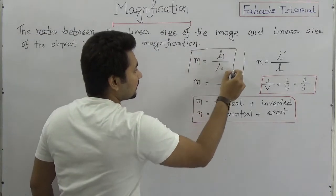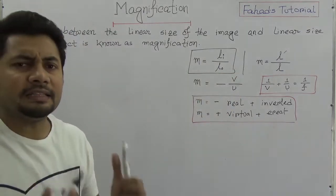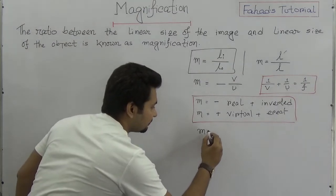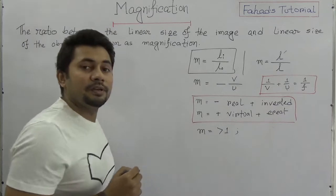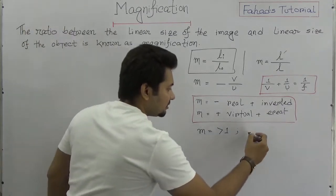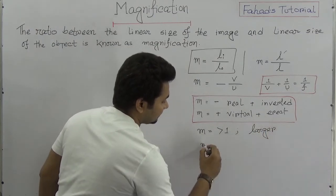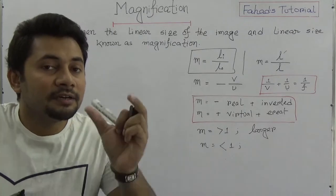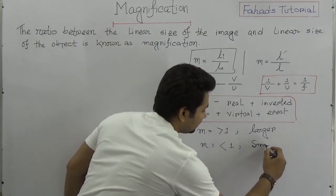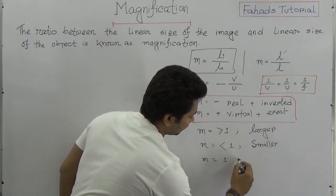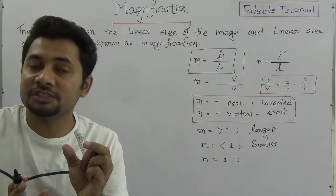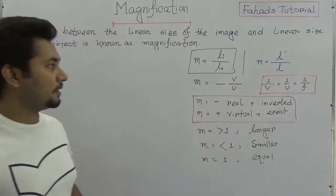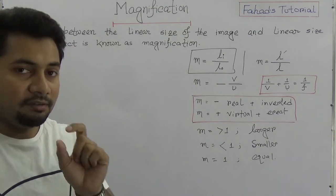From these equations, the magnitude of M can be equal to one, less than one, or greater than one. If M is greater than one, the image is larger than the object. If M is less than one, the image is smaller. If M equals one, the image length is equal to the object length.